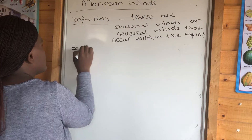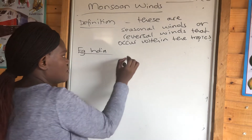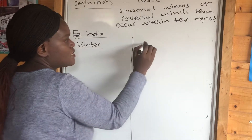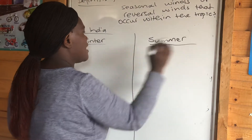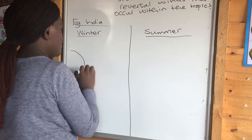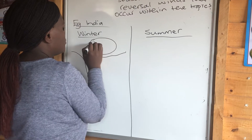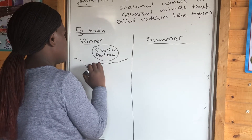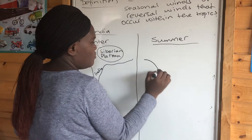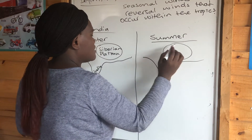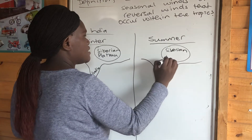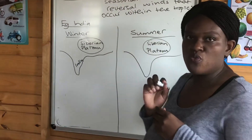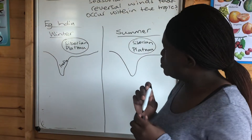Whenever we look at monsoon winds, we always give the example of India, looking at the Siberian plateau and what happens to those winds within the Siberian plateau. I'm going to draw India and the Siberian plateau, also on the summer side, so you can see how the winds tend to change from winter to summer.